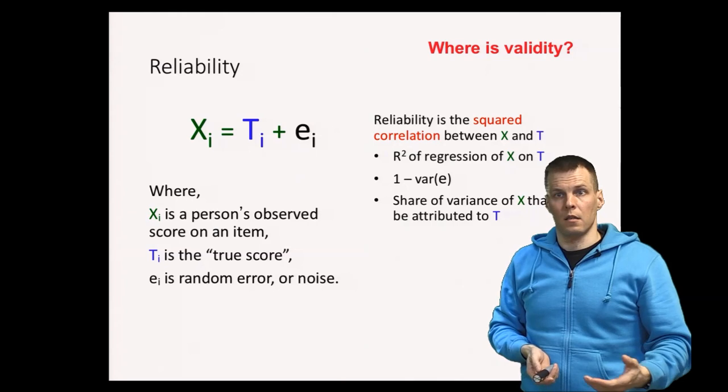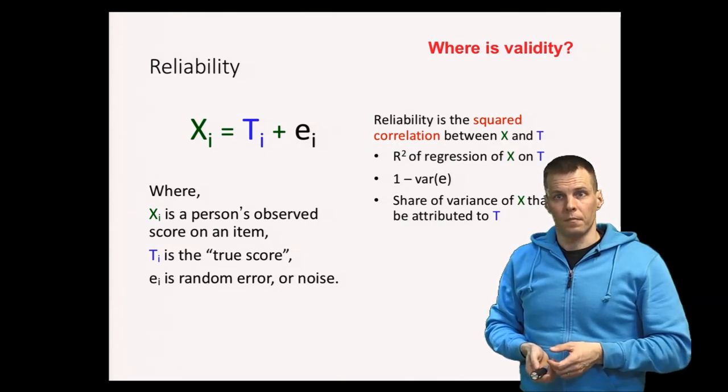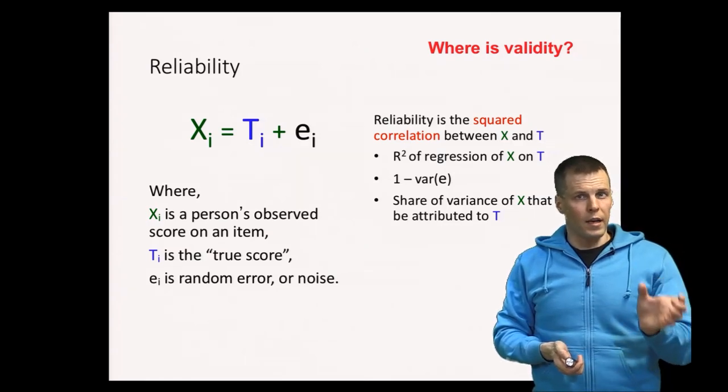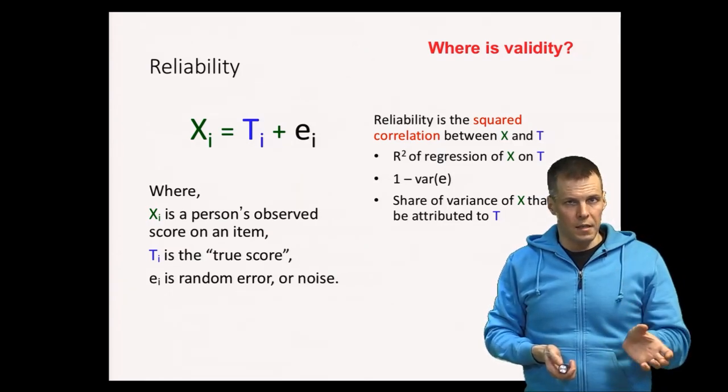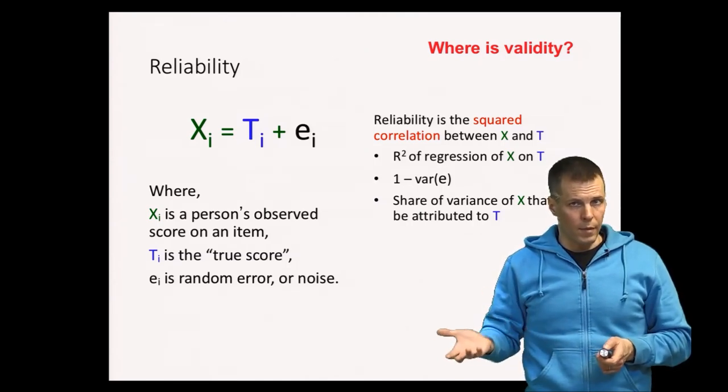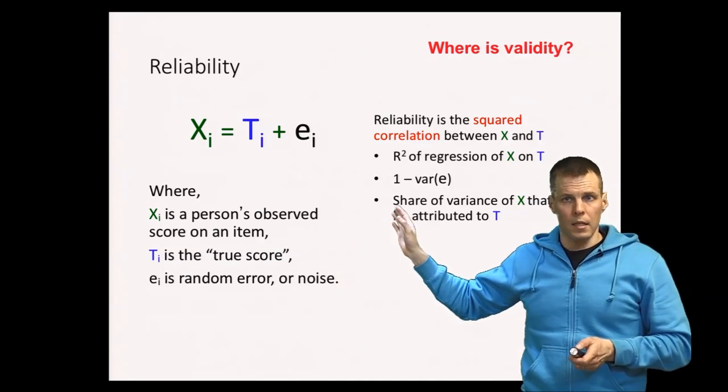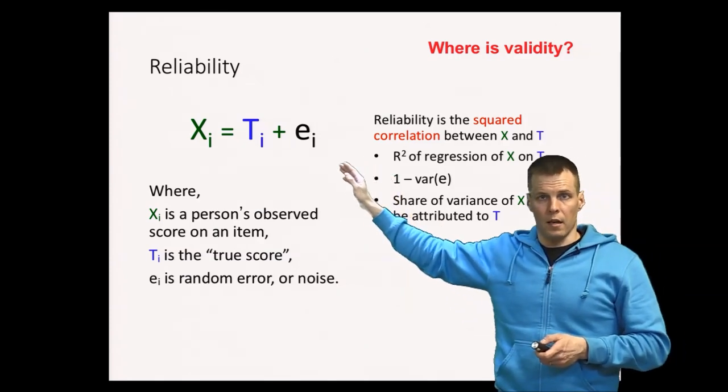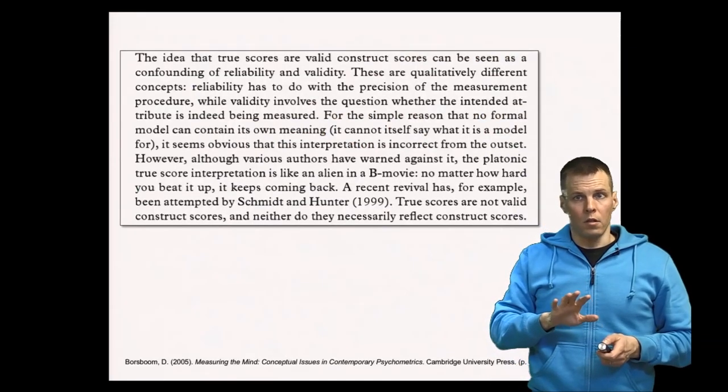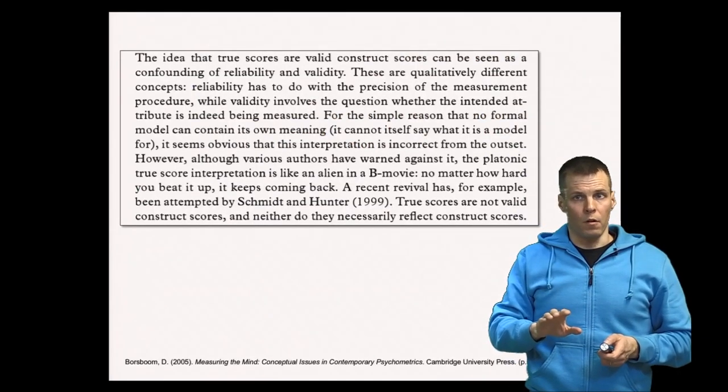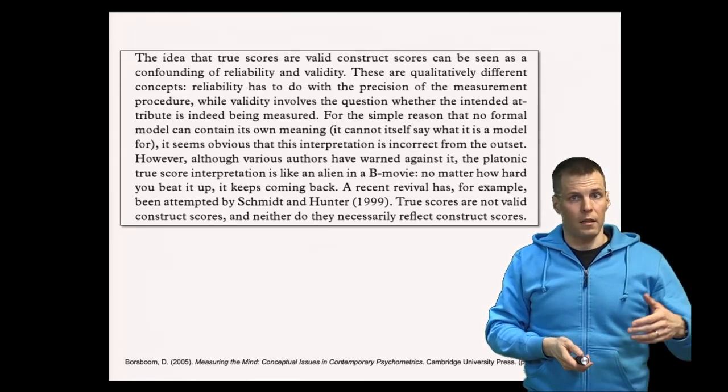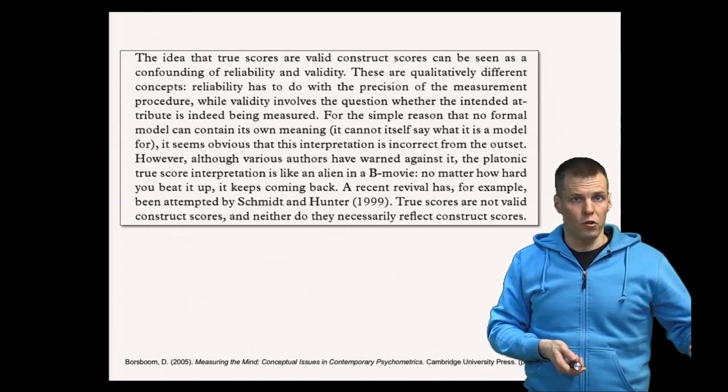So where is validity in this theory? Turns out that classical test theory is not really a measurement theory because it doesn't address validity. Instead, it is a theory that allows us to define reliability. So classical test theory doesn't really tell us what the T is, and we cannot particularly infer that the T—we cannot make claims based on classical test theory that the T would be a score of any particular construct.